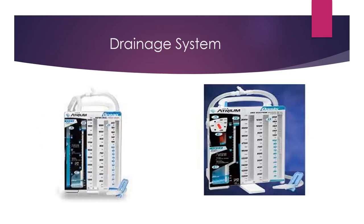Let's take a look at the two drainage systems — we have something called a wet seal and a dry seal. On the left is a classic wet seal and on the right is a classic dry seal. If you notice the very left of both chambers, one has water filled up in blue and this one has a dial — that is the difference. They both still have what's called a water seal chamber. This is a dry system and this is a wet system.